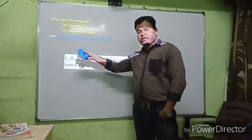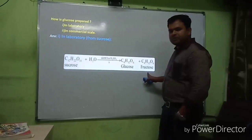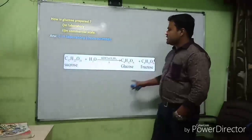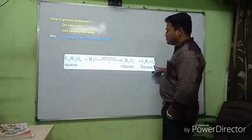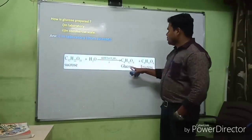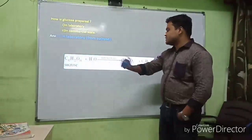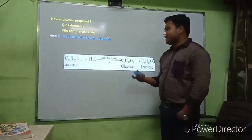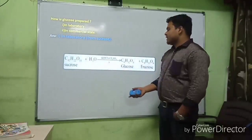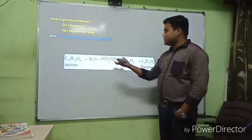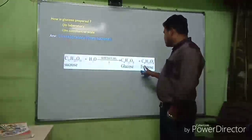Sucrose on acid hydrolysis gives glucose plus fructose. Sucrose (C₁₂H₂₂O₁₁) on hydrolysis gives C₆H₁₂O₆ (glucose) + C₆H₁₂O₆ (fructose). The number of atoms on both sides is equal, so the equation is balanced.